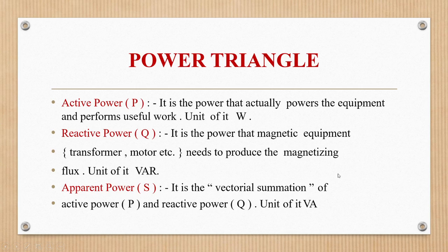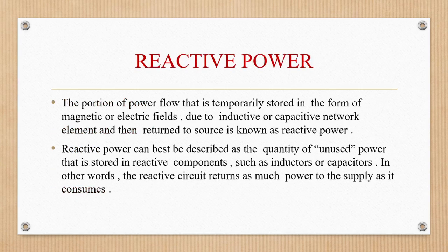Active power is the power that actually powers the equipment and performs useful work; its unit is watts or kilowatts. Reactive power, represented by Q, is the power that magnetic equipment needs to produce the magnetizing flux; its unit is volt-ampere reactive. It is used in transformers, motors, etc. Apparent power, represented by S, is the vectorial summation of active power and reactive power; its unit is volt-ampere. Reactive power is the portion of power flow temporarily stored in the form of magnetic or electric fields due to inductive or capacitive network elements and then returned to the source.